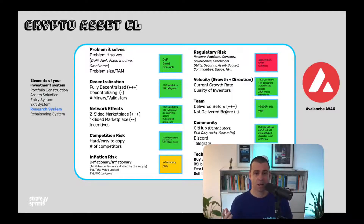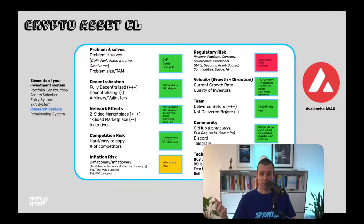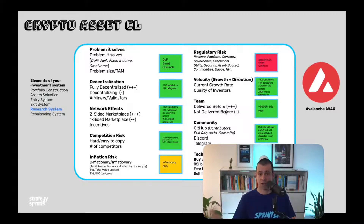Point six: regulatory risk. What's the probability that the SEC will classify it as a security and take action, or that specific nations will ban it? Assess which asset class it belongs to, then evaluate the risk of regulatory punishment. Also check velocity — are they moving in the right direction at the right pace? What's the adoption growth and TVL growth?